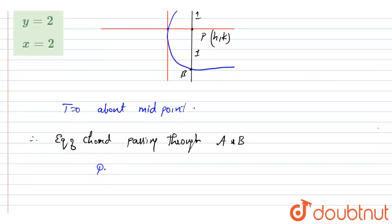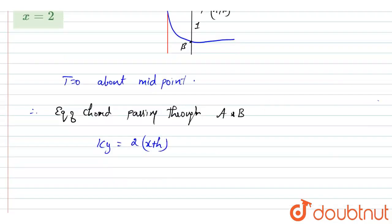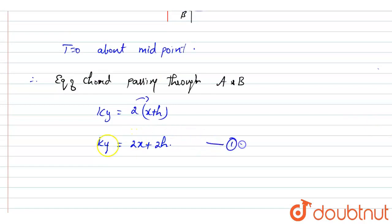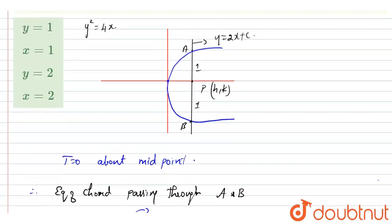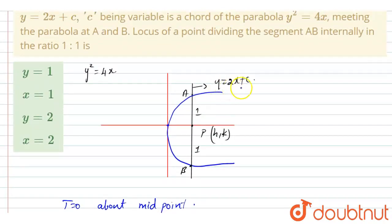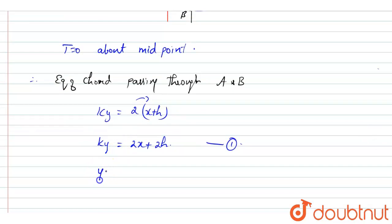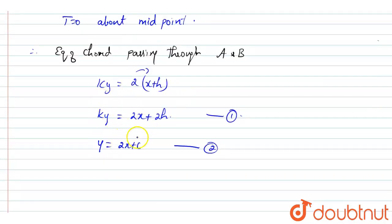Here the constant term I'm going to take, so ky equal to 2 into (x plus h). So this is the equation of the chord passing through the parabola. Now I'm going to take this two values inside, so ky equal to 2x plus 2h. I'm going to take this as equation 1. This equation is the same as y equal to 2x plus c.